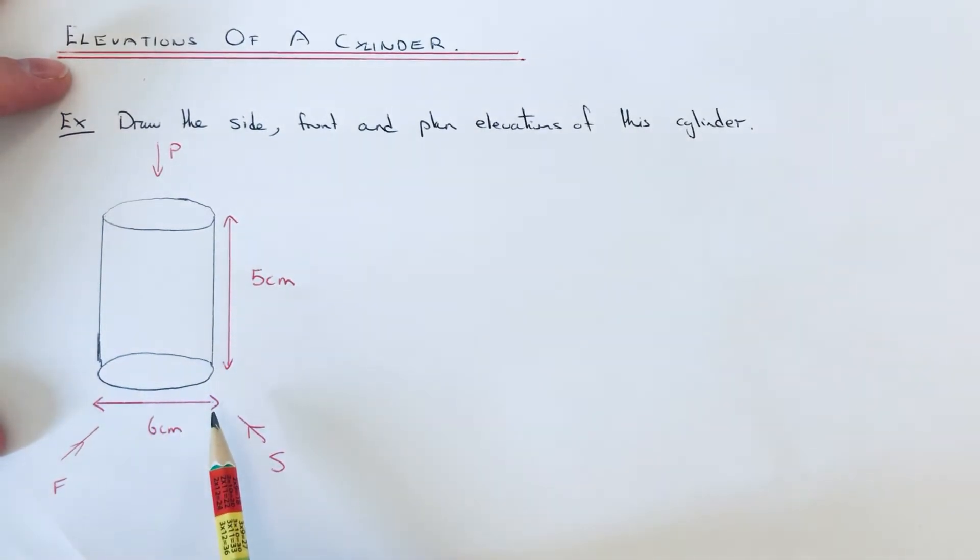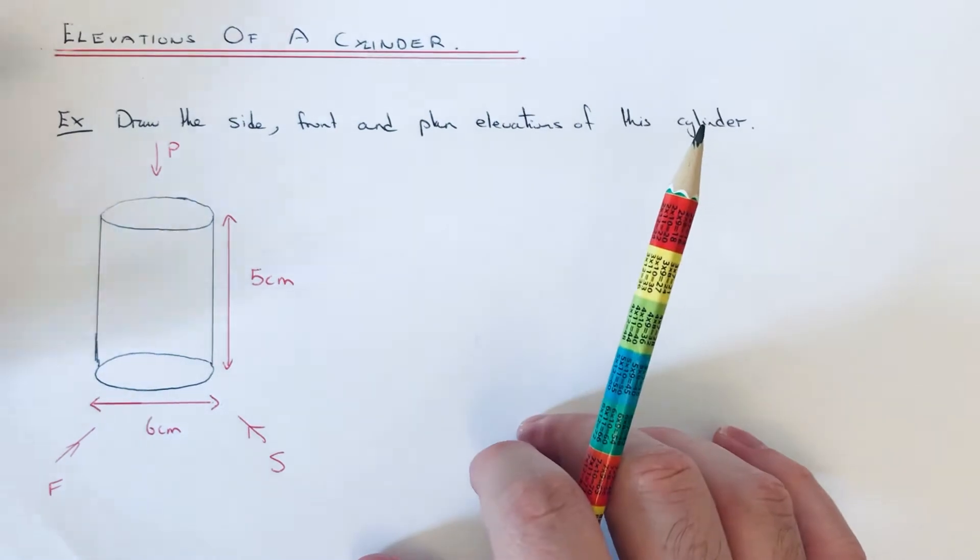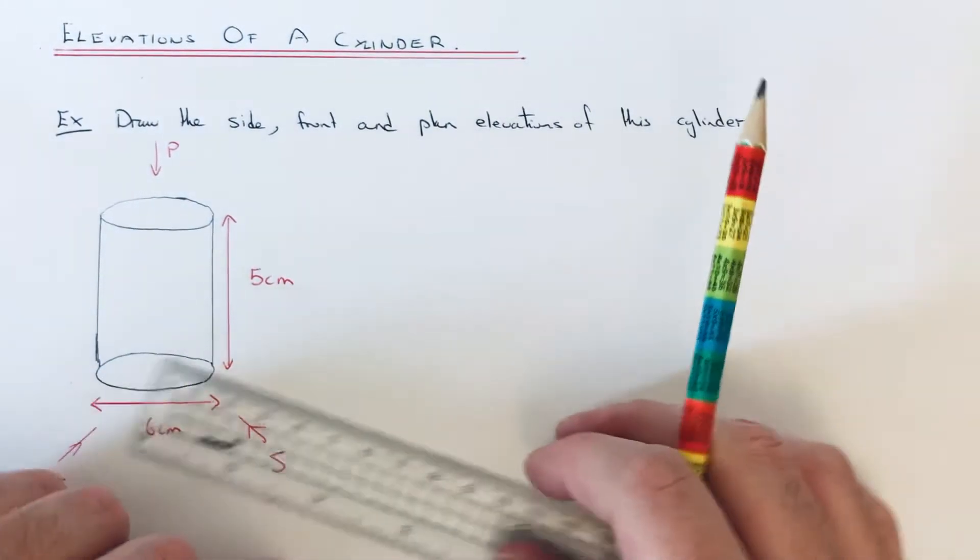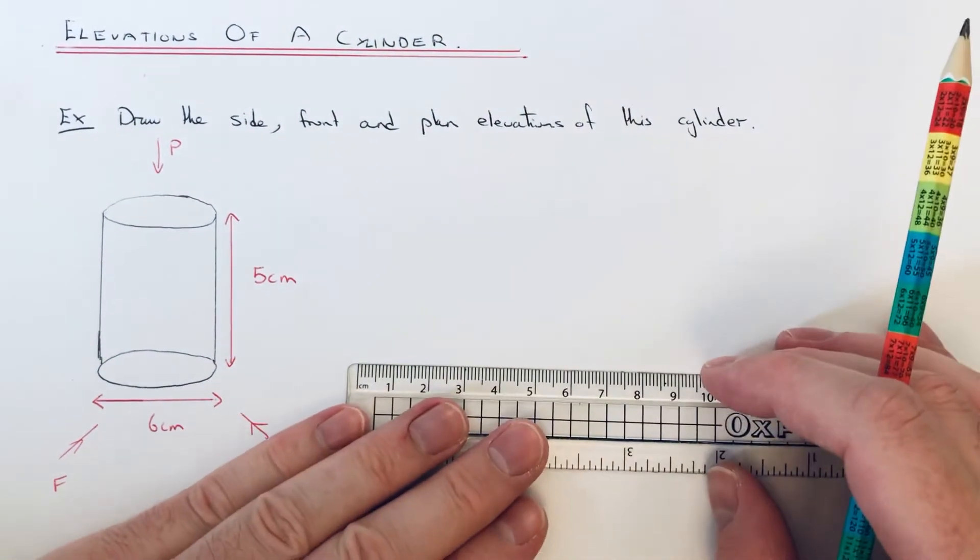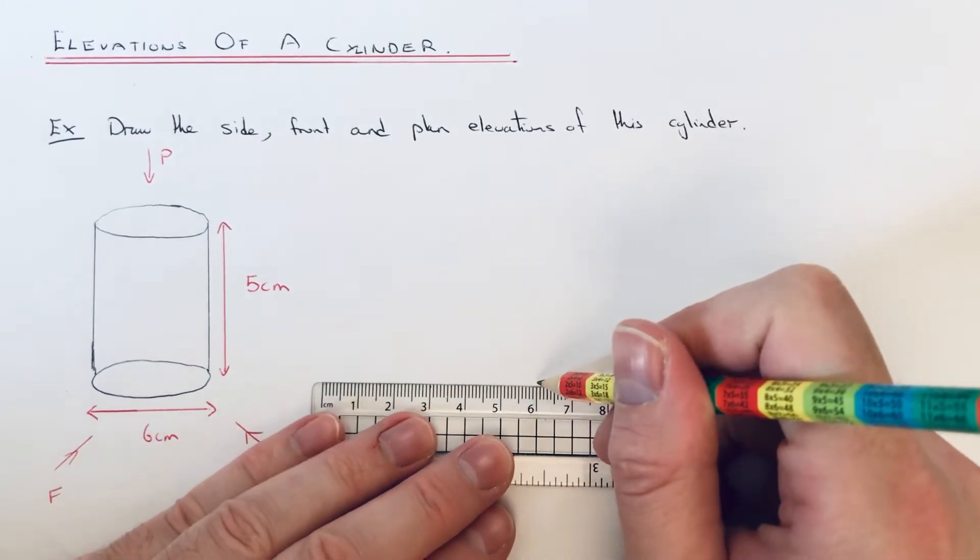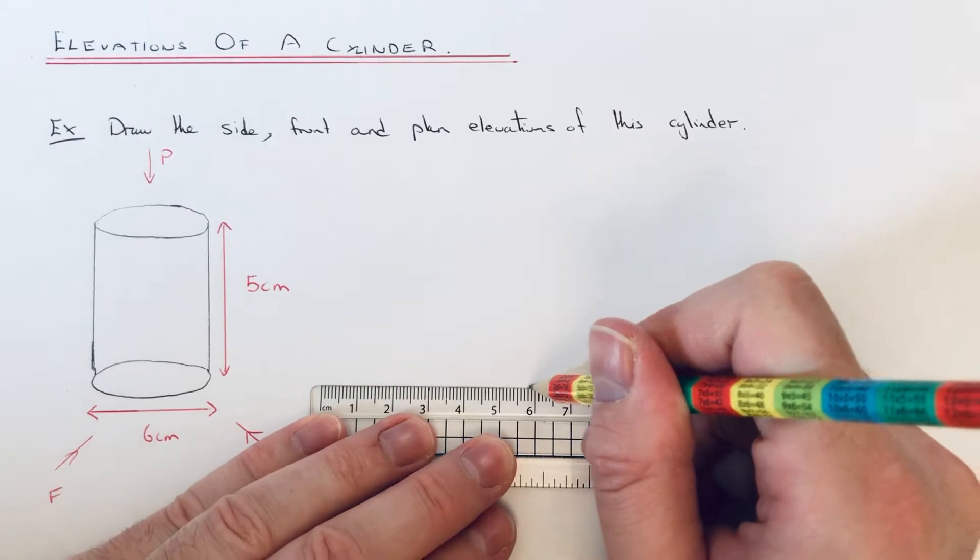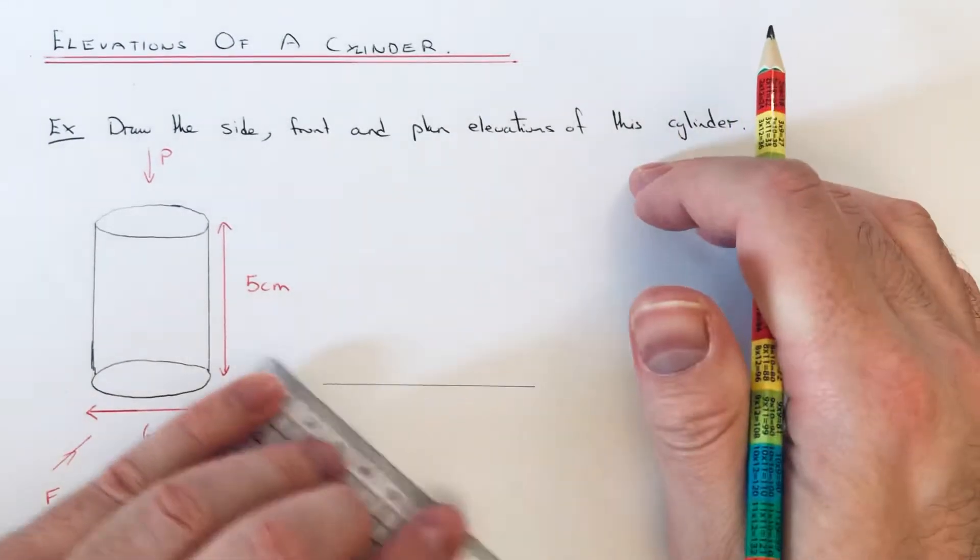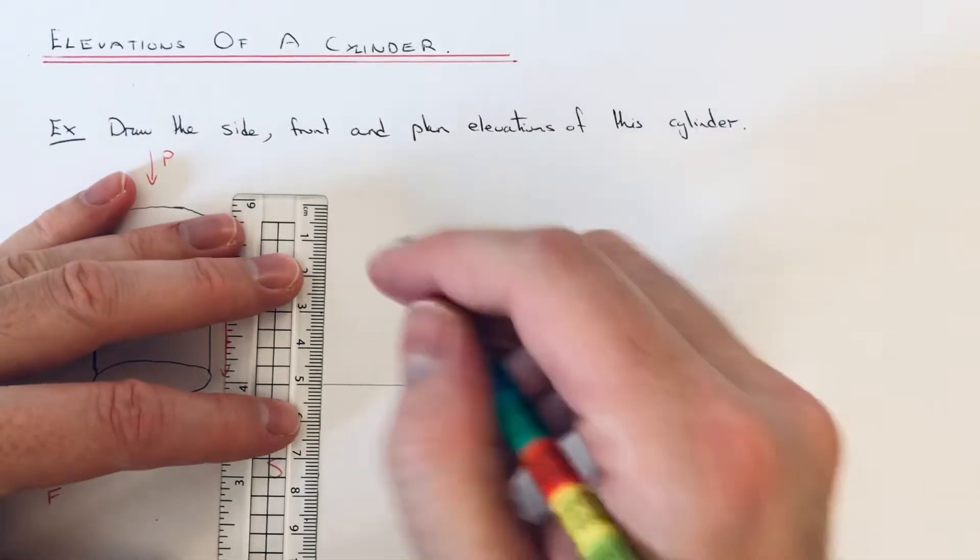That's the same for both the front and the side. So we go 6 centimeters across and 5 centimeters up.